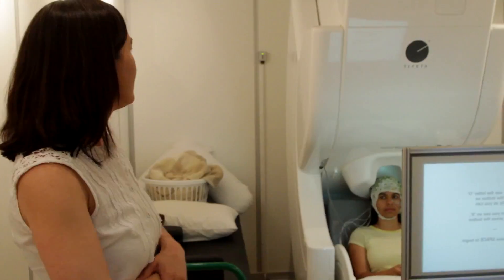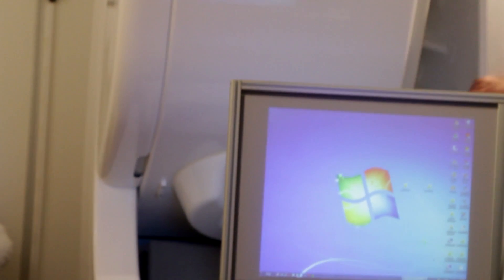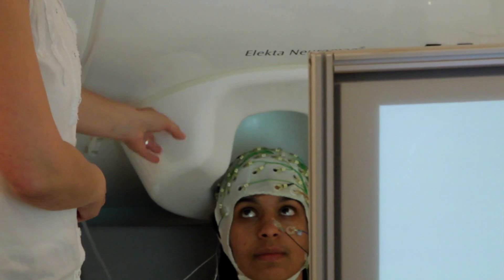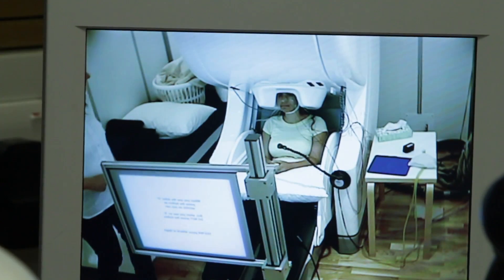This is our MEG. The system has an array of 306 gradiometers and magnetometers that measure the magnetic fields generated by electrical signals in the brain. We're also using a 70 electrode EEG cap which records the voltage fluctuations.